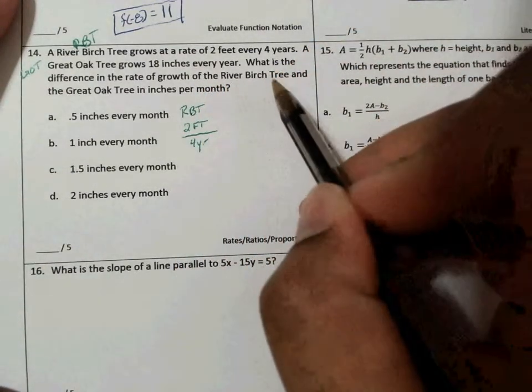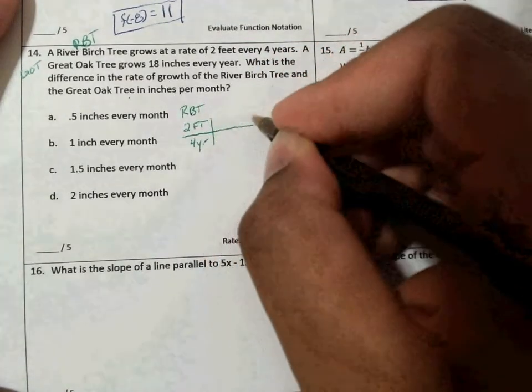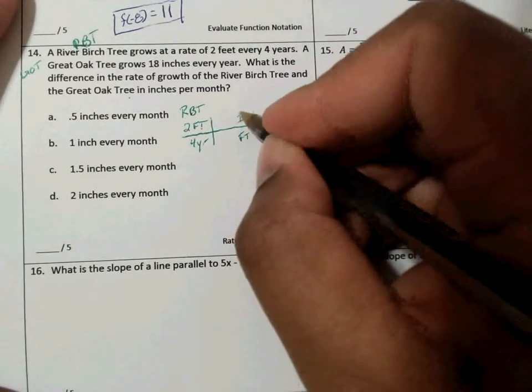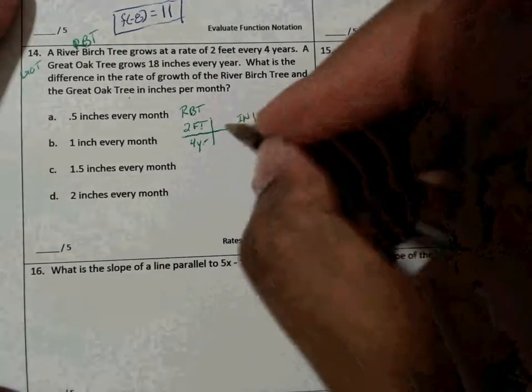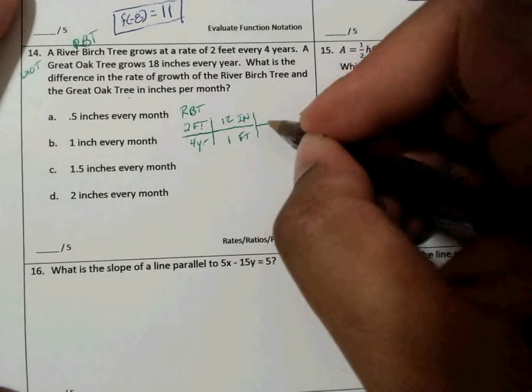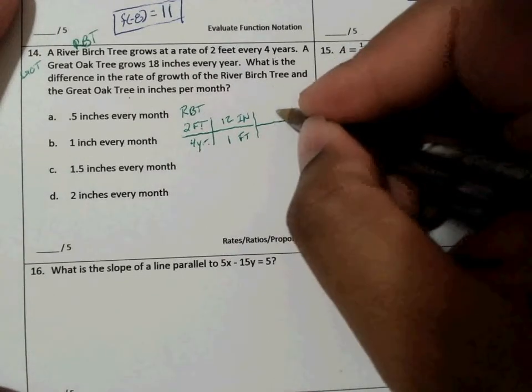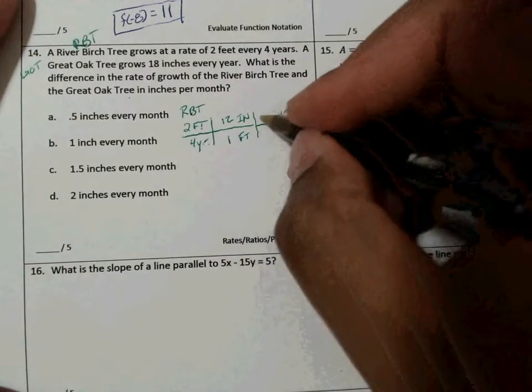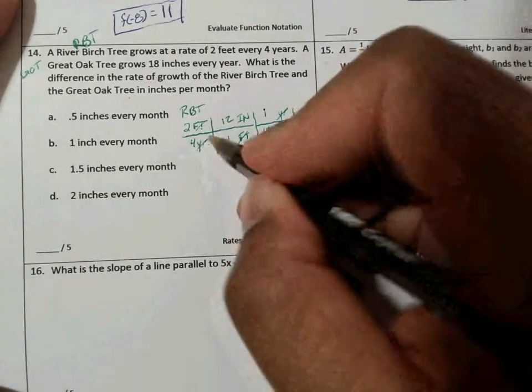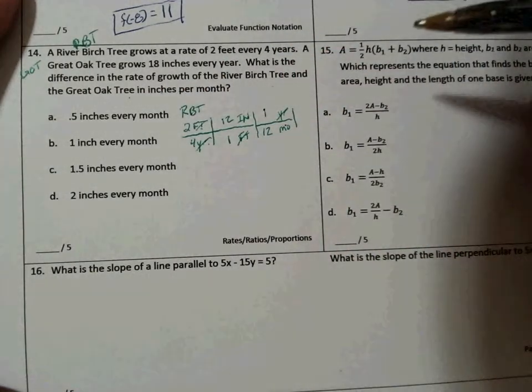As you can see, we have feet here, so we know feet convert to inches. How many inches are in a foot? I think most people know 12 inches in 1 foot. And then we need years to be in months, so I have 1 year is 12 months. My feet and my feet cancel, my year and my year cancel, and I'm left with inches per month.